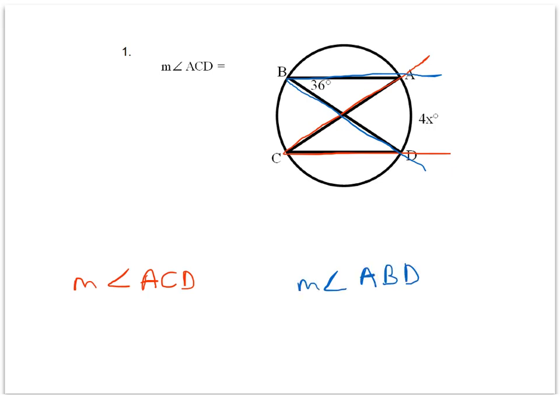Our theorem states that if we have two separate inscribed angles of a circle — the red one and the blue one — that intercept the same arc, then those angles are congruent. Notice that both angle ACD and angle ABD have their intercepted arc right here: arc AD.